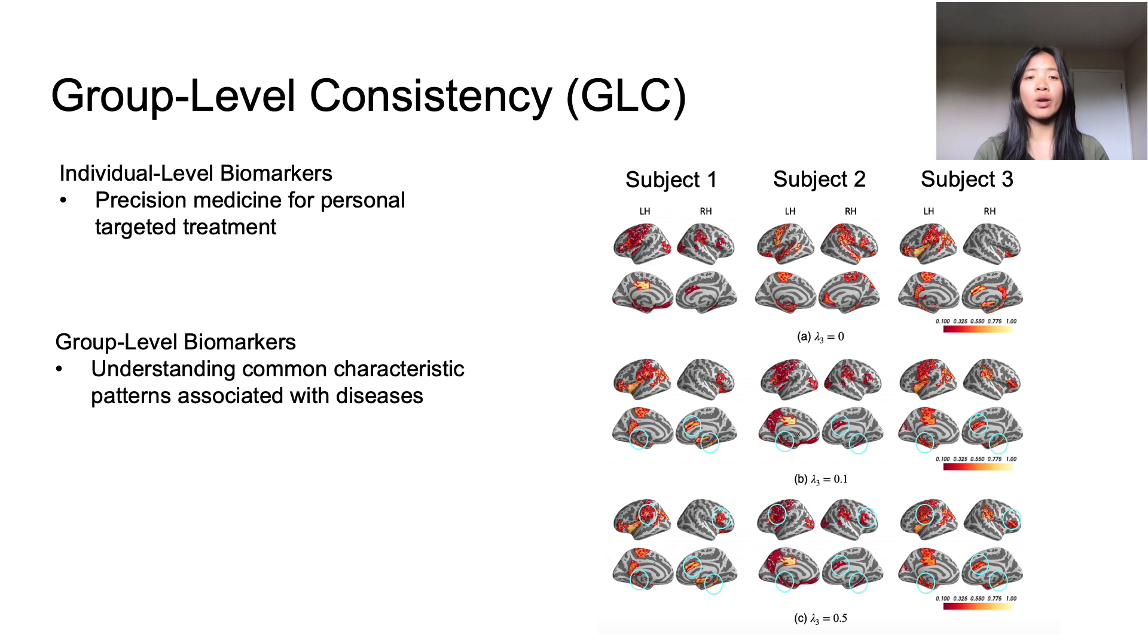So both individual and group level biomarkers can give valuable information. For example, individual level allows for personalized treatment precision medicine, where we're really trying to tailor the treatment to the patient, while group level biomarkers give a clear understanding of the common characteristic patterns associated with a neurological disease.